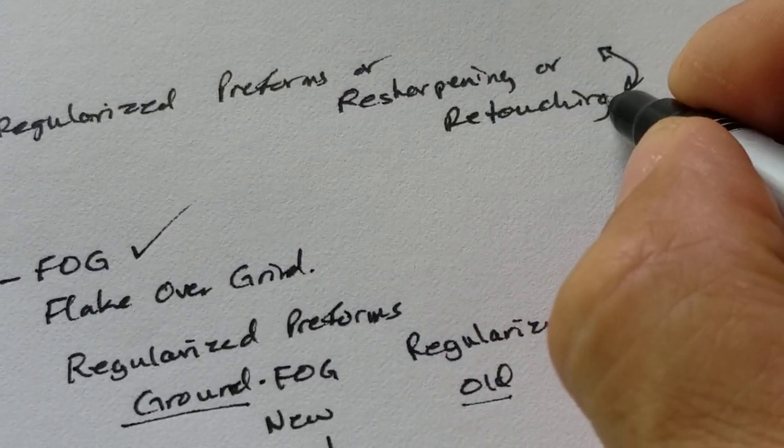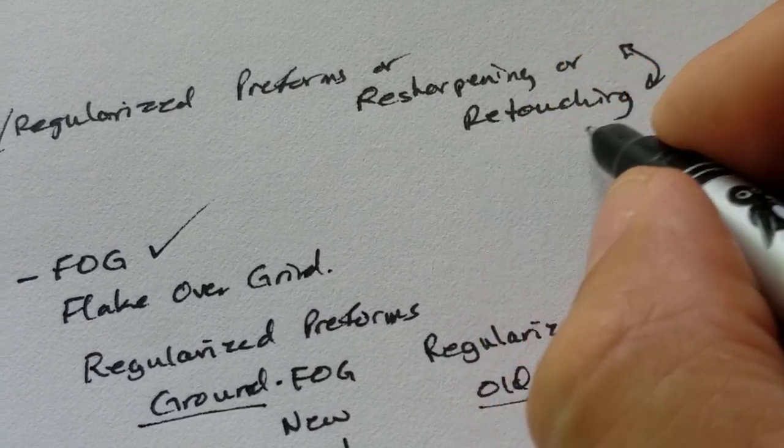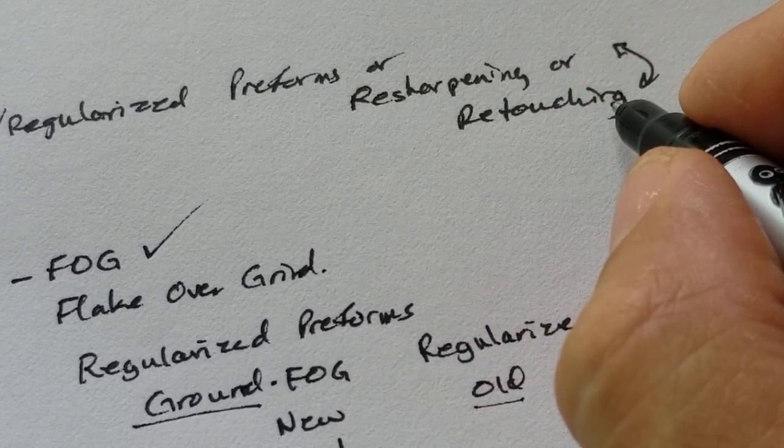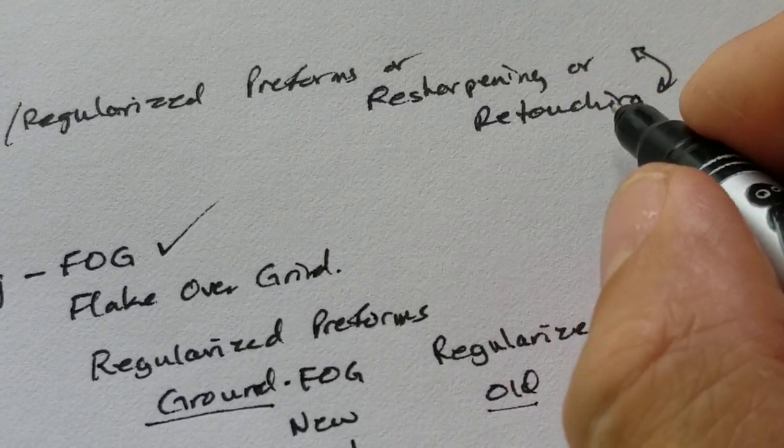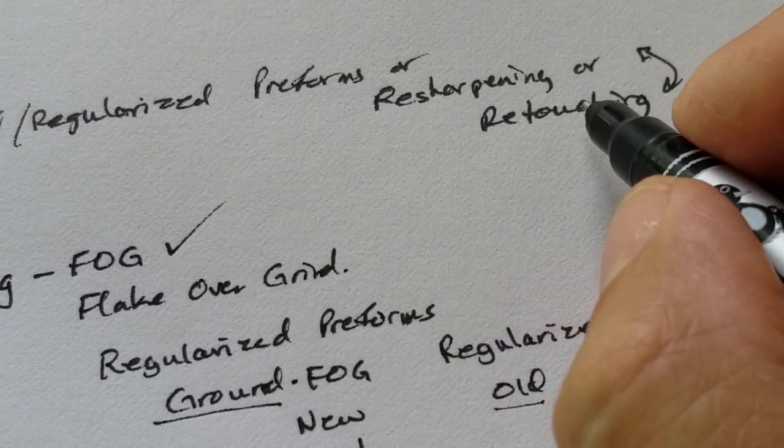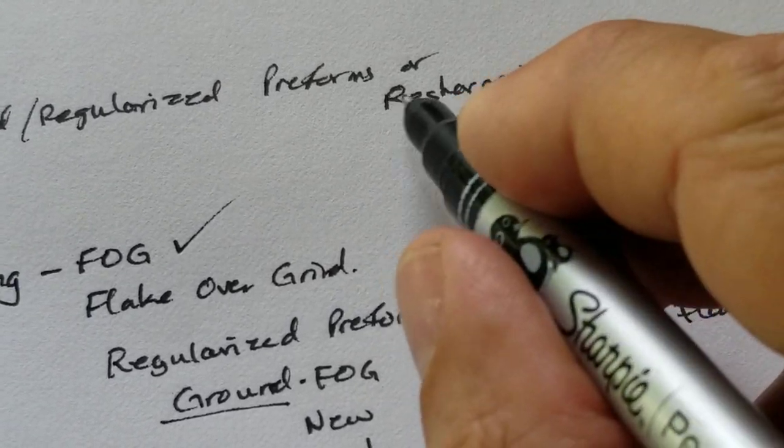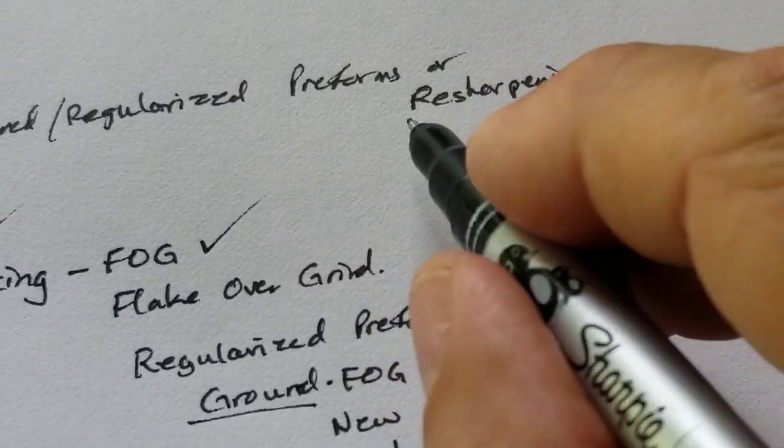Well, retouching is a general term for any work on the surface or edge of the workpiece, for any reason. Resharpening is specifically for resharpening.